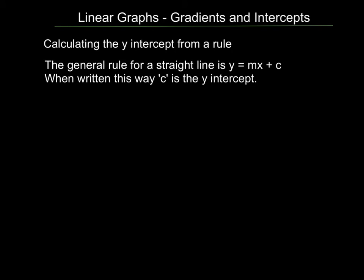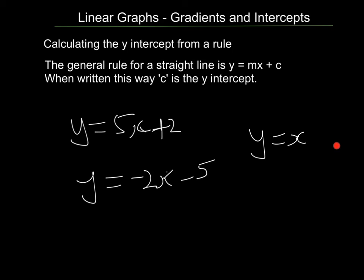The general rule is also a very good way for finding the y-intercept. If I've got an equation y equals 5x plus 2, the y-intercept is plus 2. The C on the end is the y-intercept. If I've got an equation y equals minus 2x minus 5, the y-intercept is minus 5. If I've got an equation y equals x, then I have no number added on the end. There's nothing added on, so the y-intercept is 0.